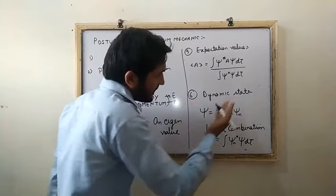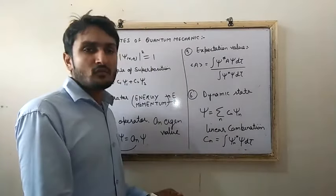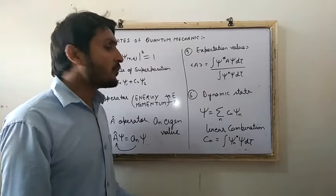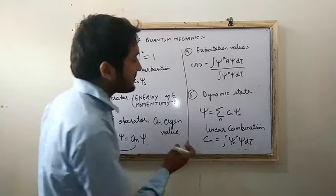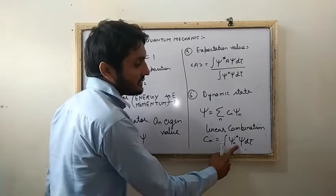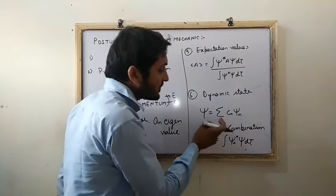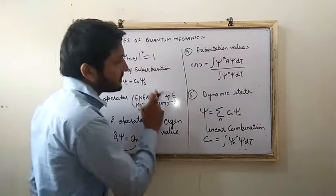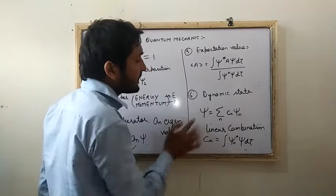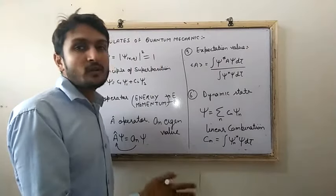The sixth postulate explains the dynamic state. It is defined by ψ = Σ cₙψₙ, which is the linear combination of wave functions. Here, cₙ = ∫ψₙ*ψ dτ, where dτ is the volume of the system and cₙ is the coefficient. This postulate is based on the principle of superposition for n number of wave functions. We can compare postulate 6 with postulate 2 — both represent the linear combination form of the principle of superposition.